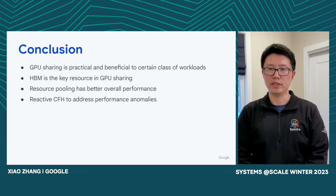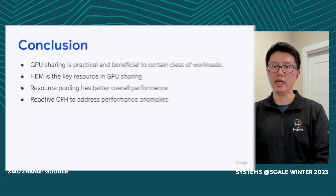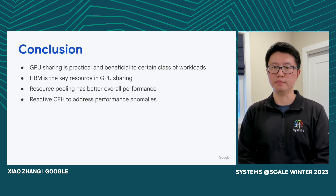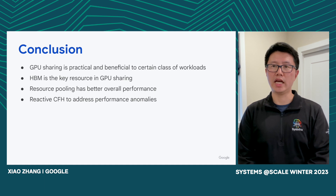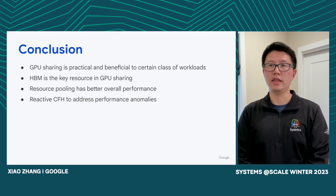To conclude, GPU sharing is practical and beneficial for certain classes of workloads that can tolerate the performance penalty, achieving great efficiency at large scale. HBM is the key resource for GPU sharing, and maximizing HBM utilization is essential for maximum performance. Resource pooling has better overall performance than static partitioning, with benefits from both spatial and temporal resource usage. Finally, the reactive Cry for Help mechanism reduced performance anomalies from 40% to 5% in our case. Thank you for your time.